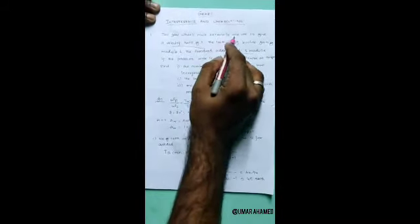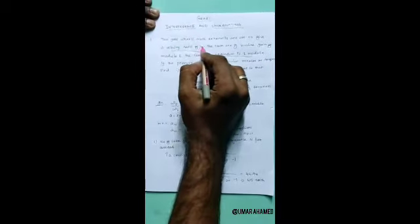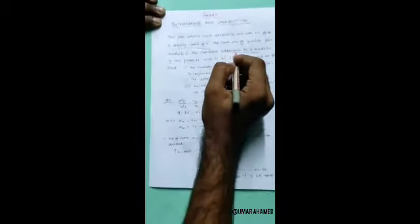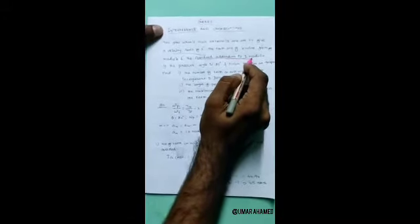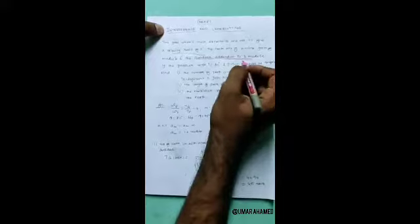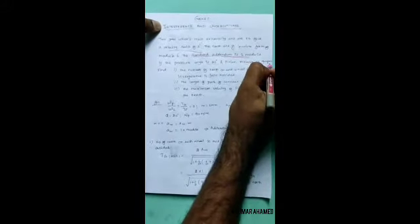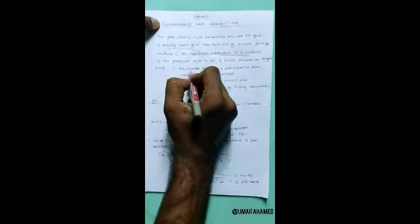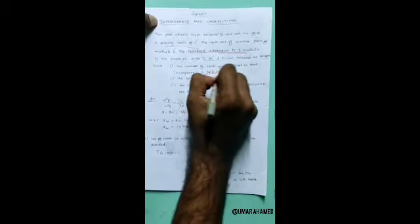This is the first problem. Two gear wheels mesh externally and are to give velocity ratio of 3. The teeth are involute form of module 6, standard addendum is 1 module. If the pressure angle is 20 degrees and pinion rotates at 90 rpm, find the number of teeth on each wheel so that interference is just avoided.